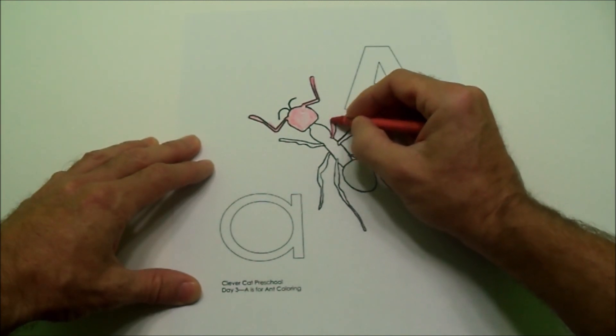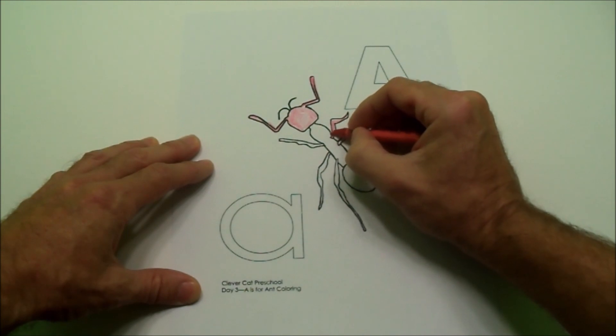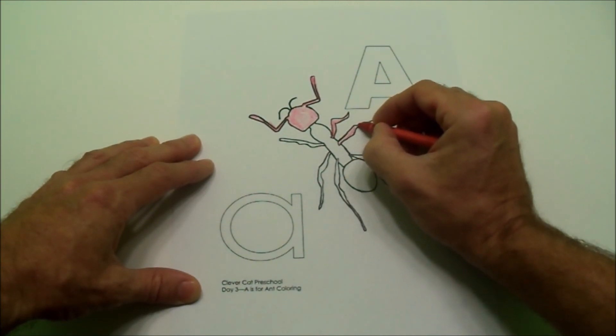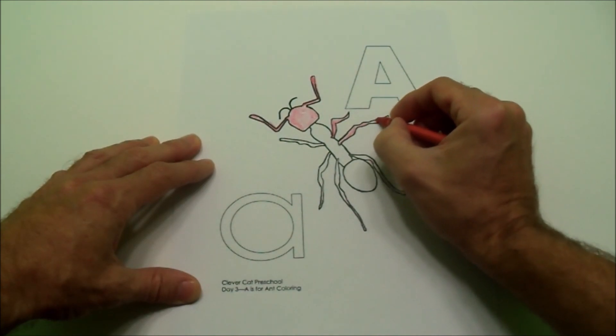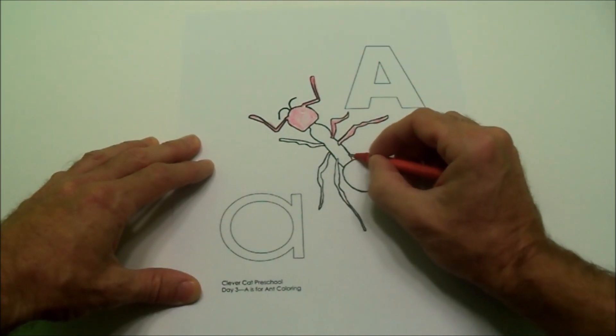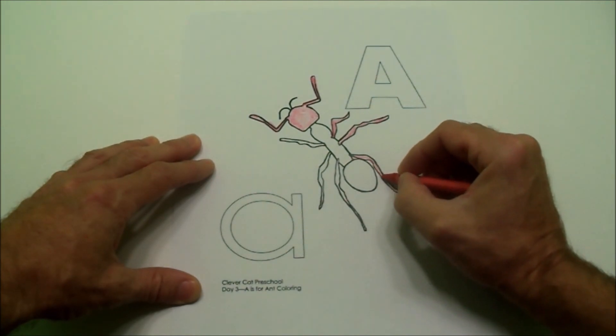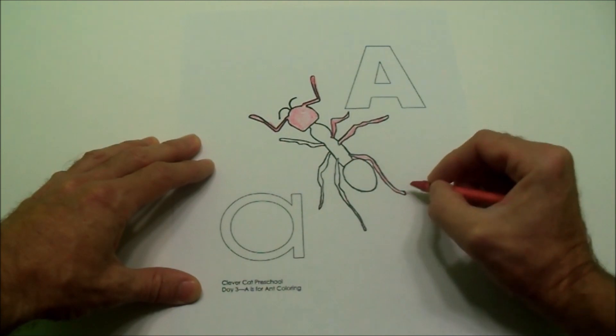I will color the legs on the right, just like this. I will color all the legs on the right, staying between the lines. Whoops, I went outside the lines just a little bit. I am going down.